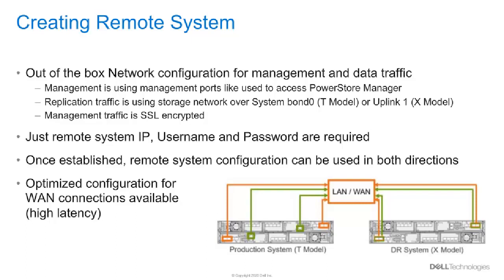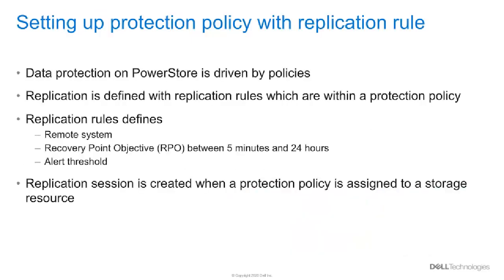The picture on the bottom right shows a minimal out-of-the-box network configuration between a PowerStore T and X model. Data protection on Dell EMC PowerStore systems is controlled by protection policies, so it is required to define a replication rule within a protection policy. A protection policy can hold no or up to four snapshot rules for local data protection and no or one replication rule for remote data protection. The replication rule defines the remote host where data should be replicated to, the recovery point objective, and an alert threshold. The system schedules RPO-based replication at 50% of the configured time — for example, a one-hour RPO will lead to scheduled replication every 30 minutes.